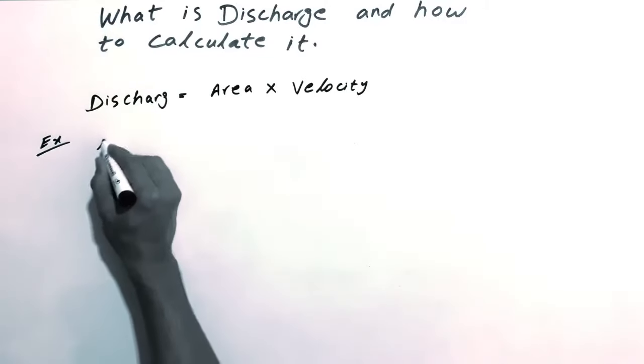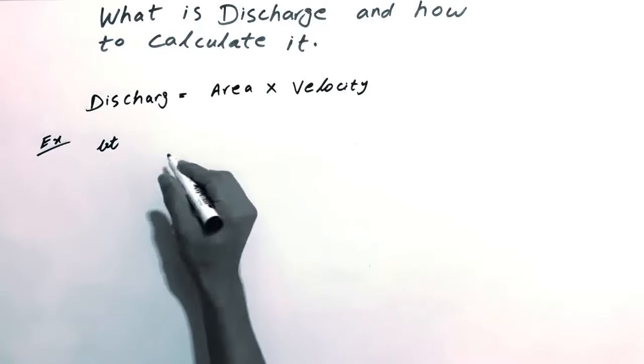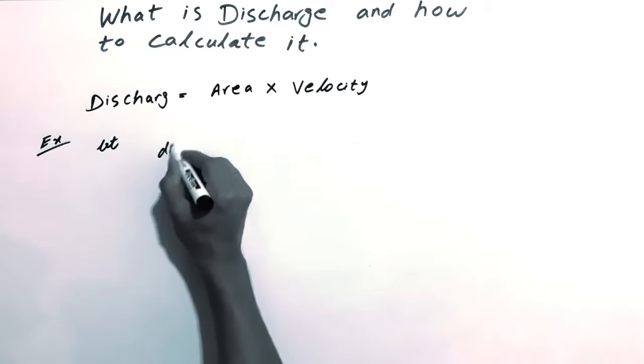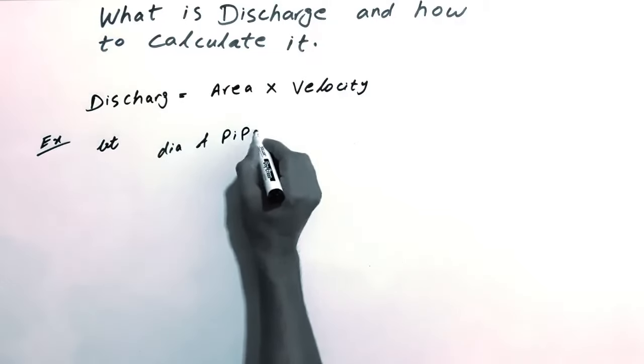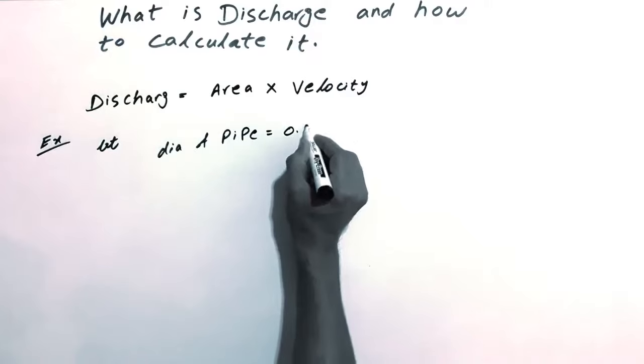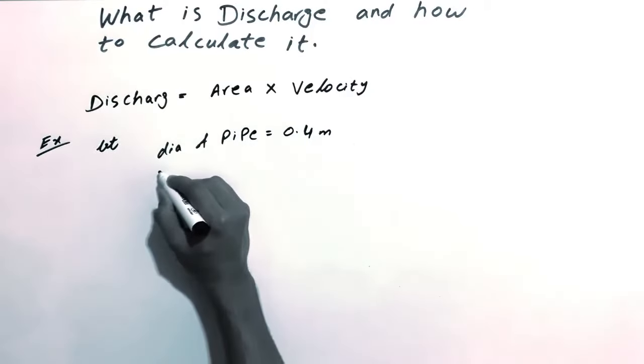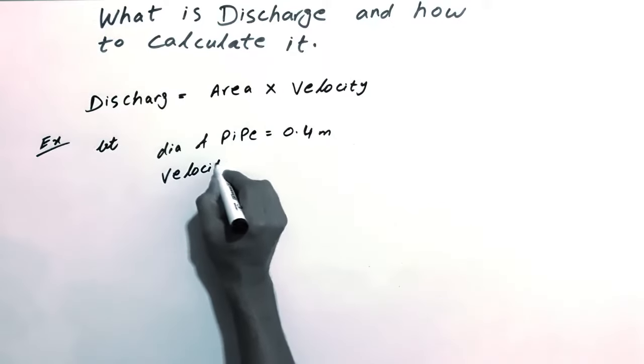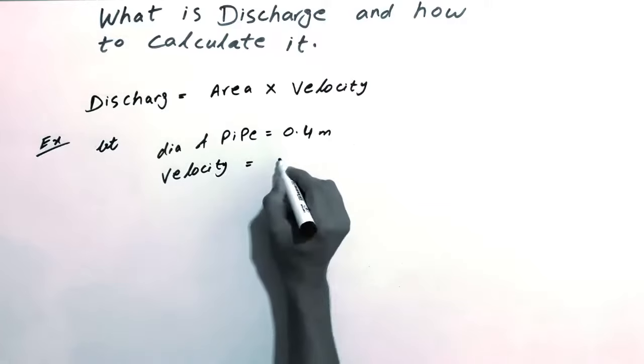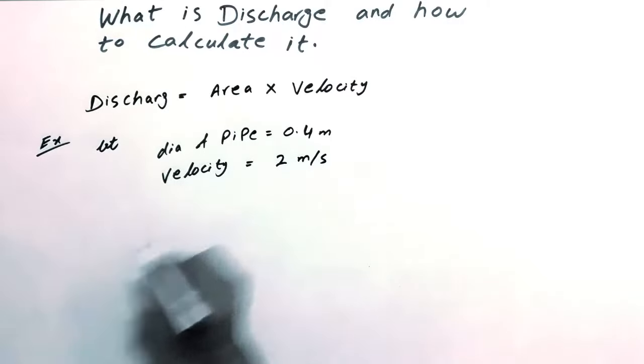Let's say we have a pipe with diameter 0.4 meters. The velocity is 2 meters per second.